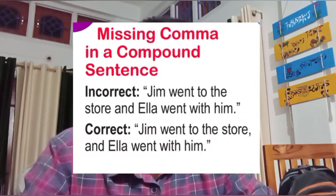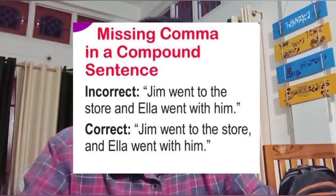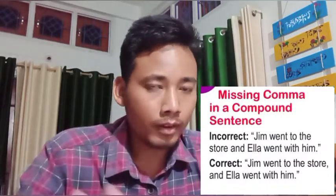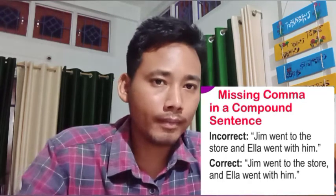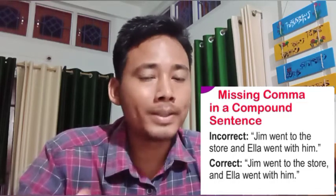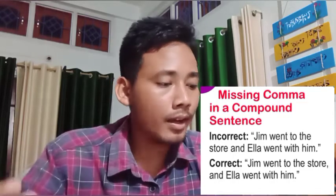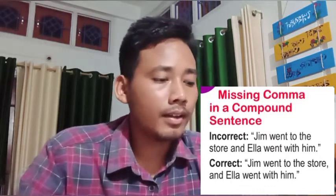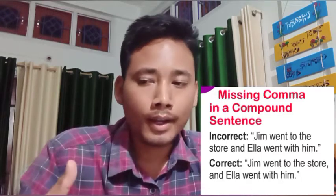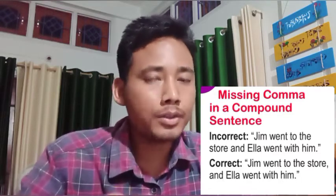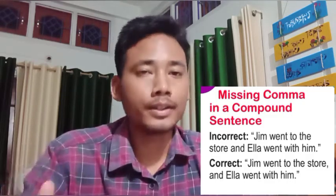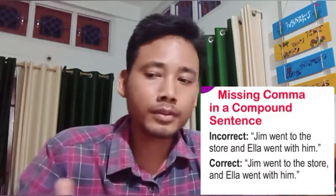Number six: missing comma in a compound sentence. For example: 'Jim went to the store and Ila went with him.' This looks fine, but since it is a compound sentence, a comma is required. The correct version is: 'Jim went to the store, and Ila went with him.' When writing compound sentences, be very careful that you have not missed punctuation or a comma — this is something you must keep in mind.